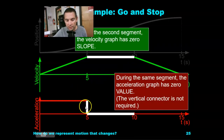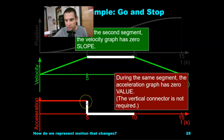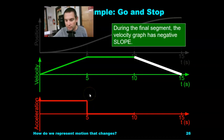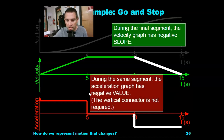This vertical connector on the graph is not required. Sometimes you'll see just a straight line and then a straight line, but other times you'll see this vertical connector making all of the graph continue. Now in the last segment, we have the velocity graph which has a negative slope — negative acceleration. During the same segment, the acceleration graph has a negative value.